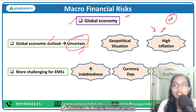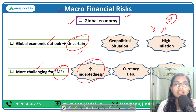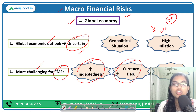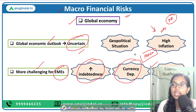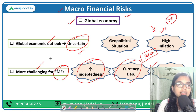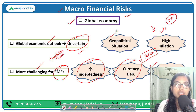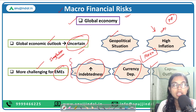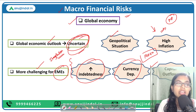If we talk about the situation for emerging market economies, their situation has been more challenging because they are facing increasing risk of indebtedness — taking more loans. Then, because of currency depreciation — which you can connect with India, where our currency has been depreciating at a faster pace — there are capital outflows leading to volatility and reserve losses. There is also a concern that there might be a situation of stagflation. All these have resulted in a negative and uncertain global economic outlook, posing risk to the financial stability of the entire nation.